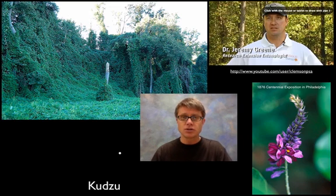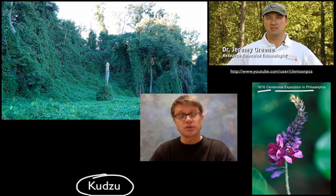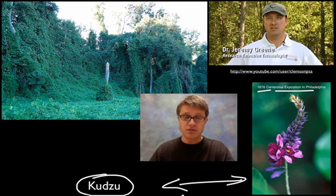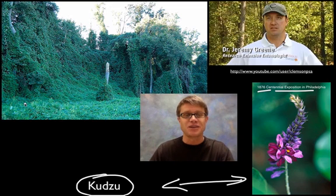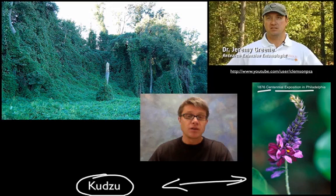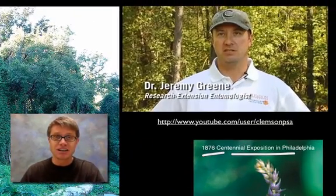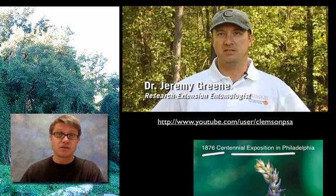Sometimes populations get out of check — the feedback doesn't work — and usually that happens when species are brought from somewhere else. In 1876, at the centennial expedition in Philadelphia, someone brought a beautiful plant from Japan called kudzu and released it in the United States. It has since taken off and gone crazy, covering much of the southeast with this vine-like plant. It was even used in World War II as camouflage to cover material on islands like Vanuatu. Once introduced into a new ecosystem, nothing had evolved to feed on kudzu, so its population grew unchecked. We call kudzu an invasive species.